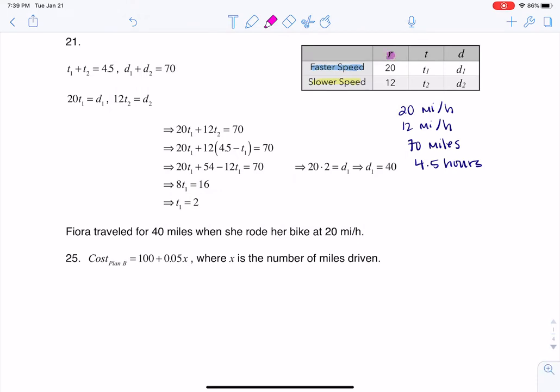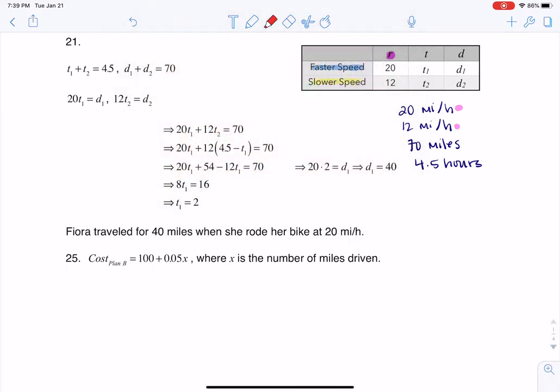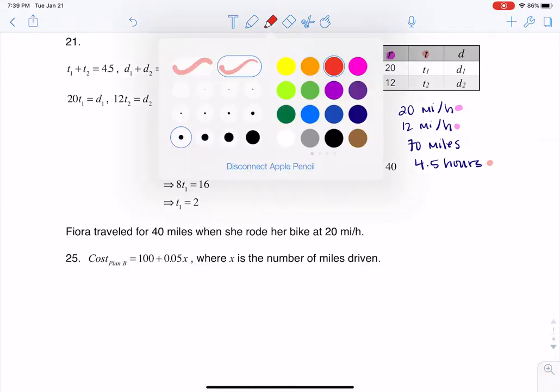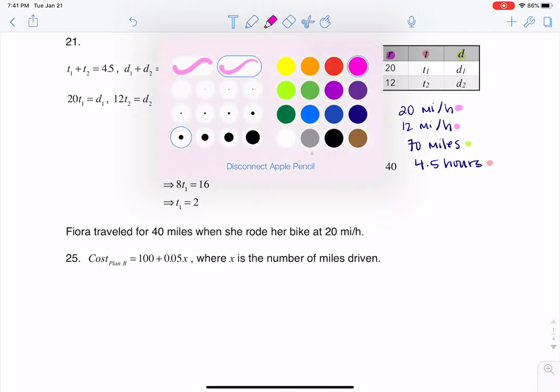When I see rate, well, these numbers here are rates, so I know that the 20 and the 12 will somehow go into this R column. The next column we run into is time, so I have a time number at 4.5 hours, so I know the 4.5 hours will be in the time column. Then the next one we see is distance. Miles is a unit of distance, so I know that 70 has something to do with that distance column.